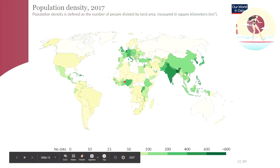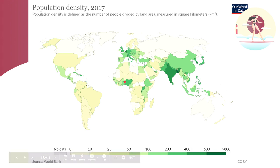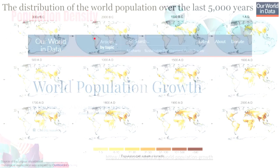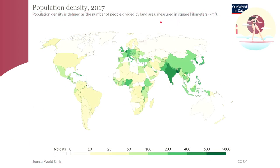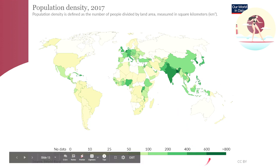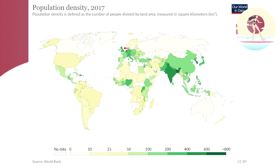This is another map from Our World in Data showing population density as of 2017, measured in population per square kilometer. The most densely populated regions — 600 to 800 humans per square kilometer — include parts of India. The Philippines falls around 400 to 600, along with Japan, South Korea, and some parts of Europe.